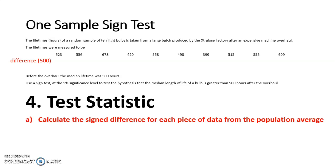The first one is 23 above 500, then we have 56 above, this one was 178 hours above, then 71 hours below, 58 above, 2 below, 101 below, 15 above, 55 above, and 199 above. So those are my signed differences.